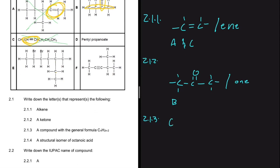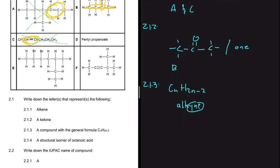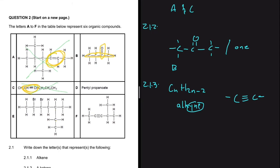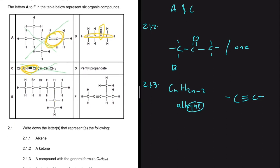Now for 2.1.3, we're looking for a compound with the general formula CₙH₂ₙ₋₂. This is an alkyne — the name ends with 'yne' and it has a triple bond where a carbon is bonded to another carbon via a triple bond. We go to our table and look for that.